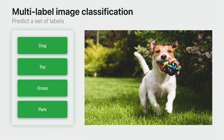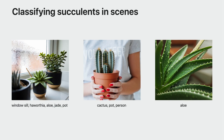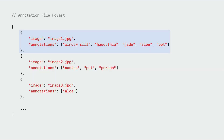Let's go build one using CreateML. The first thing I'll need to do is collect some training data. I decided to have a bit of fun and build a classifier that detects multiple succulent plants in different scenes. For example, here I have an image of Haworthia, Jade, and Aloe in pots on a windowsill. In the next image, I have a person holding a cactus in a pot. While collecting training images, it's also okay to include some images that only have a single label, like a photo of just Aloe. You'll need to organize your annotations in a JSON file.